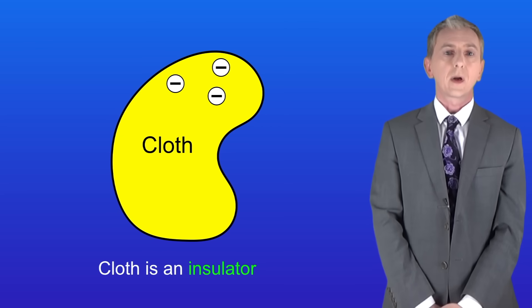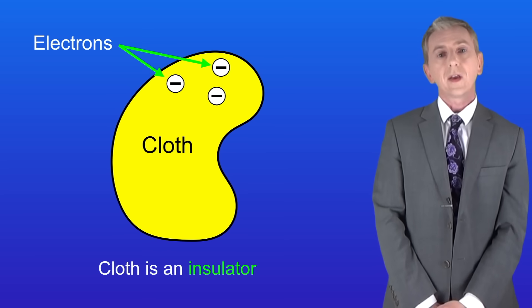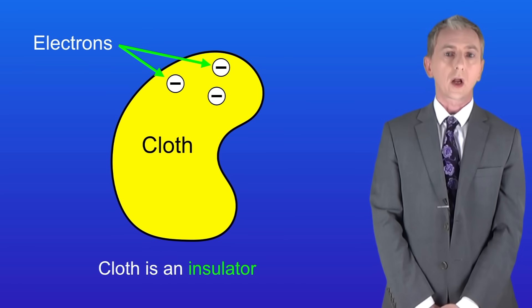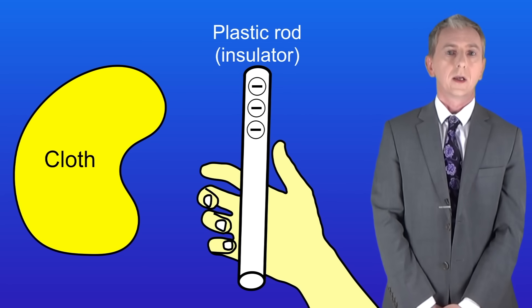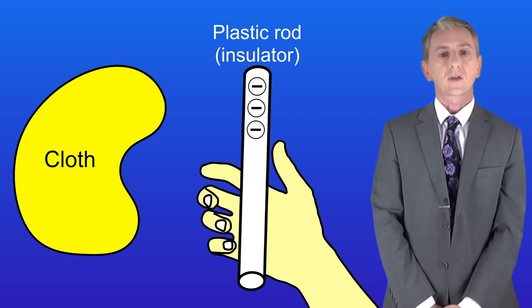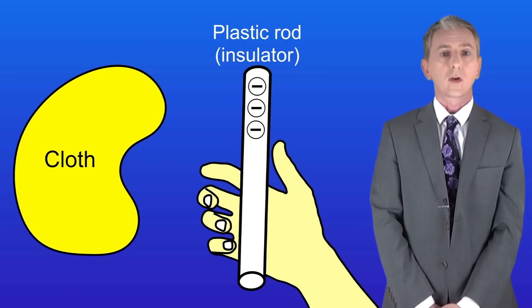Now a good example of an insulator is cloth. Like everything, cloth is covered with electrons. These electrons cannot move through the cloth because cloth is an insulator. I've now got a piece of plastic. Plastic is also an insulator just like cloth and it's also covered with electrons.